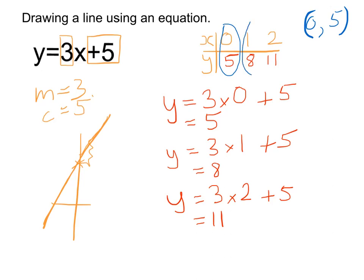We have, when x is 1, y is 8. So we have the coordinate 1, 8. And then we have, when x is 2, y is 11. And then we've got a third coordinate. So those three coordinates can be plotted onto the set of axes. Join them up with a straight line. And there you are.